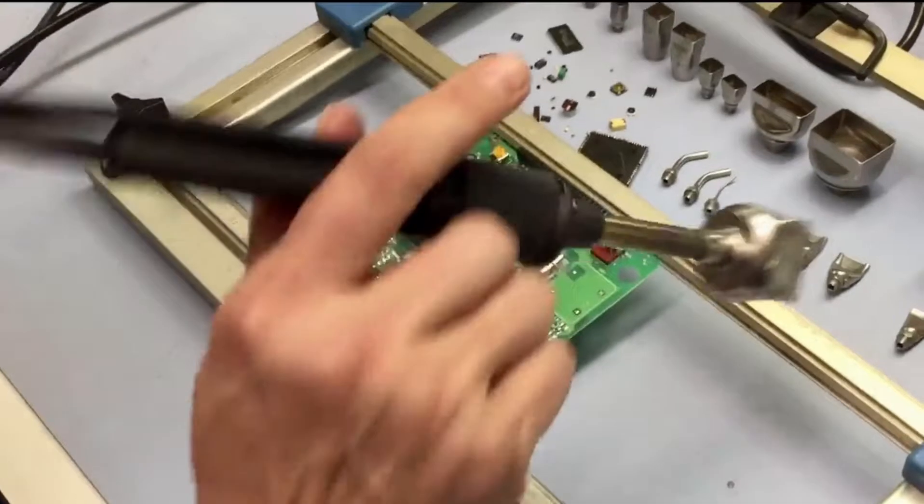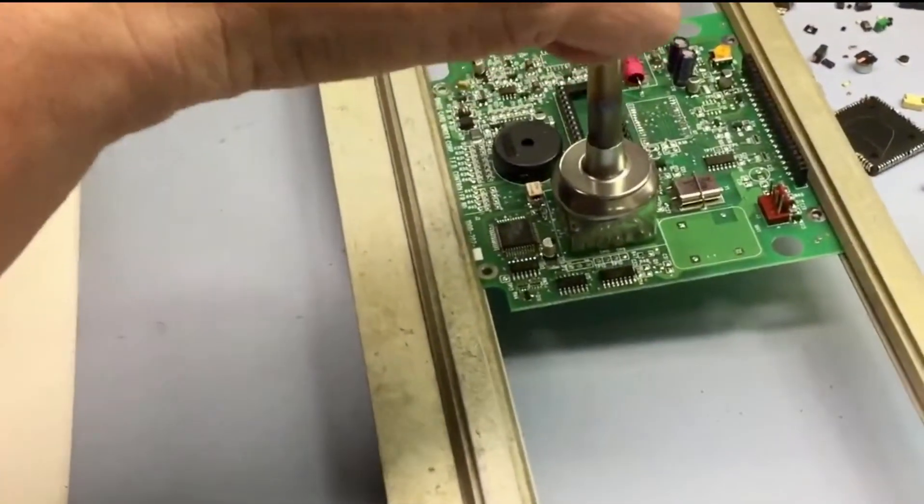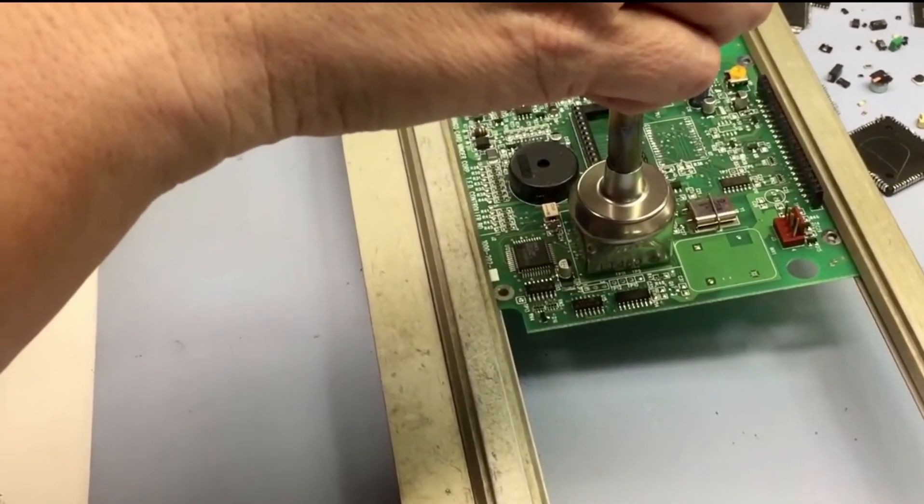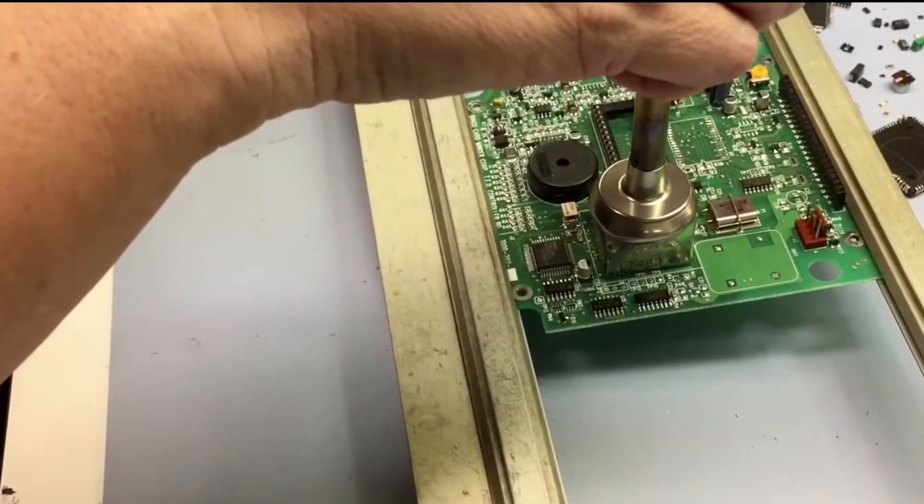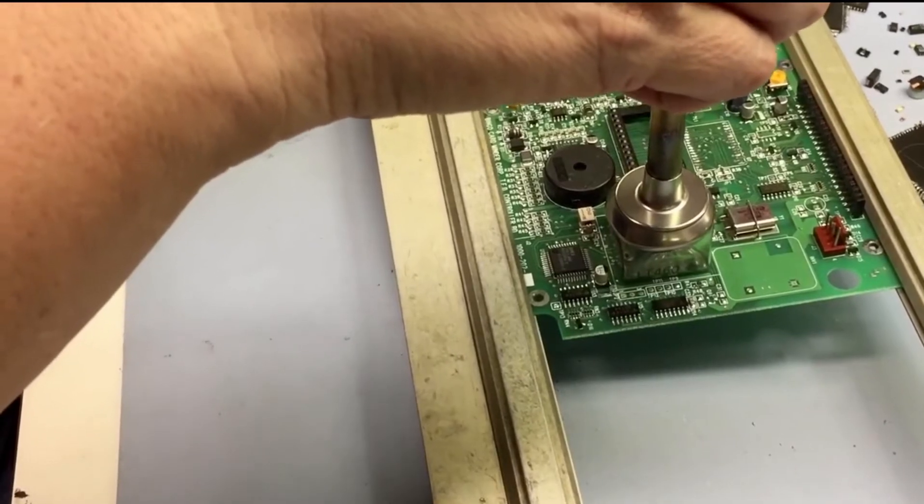Quite easily, you just put the tip right on top of the package and what I like to do is just do a little back and forth movement until you start feeling the package move. Left and right.